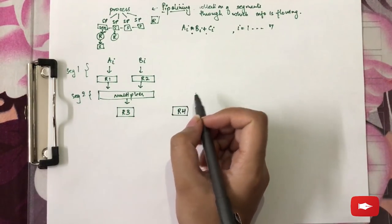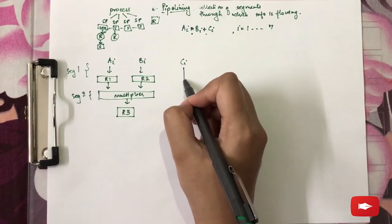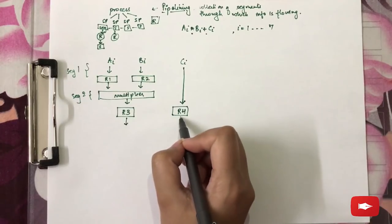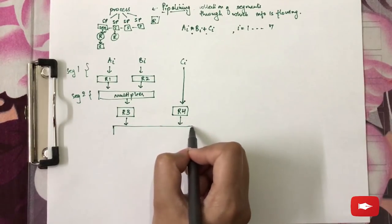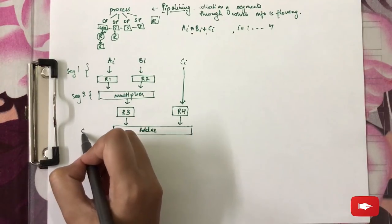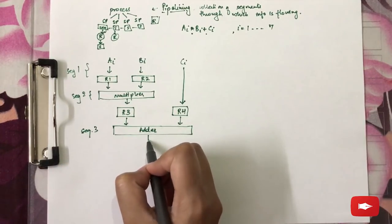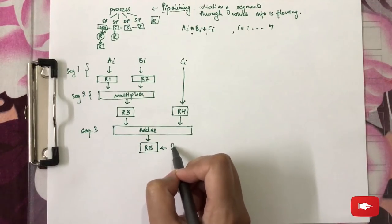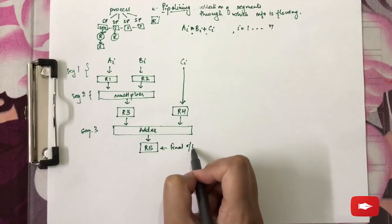And simultaneously we need the operand ci into another register that is R4. And then these two inputs will get into an adder which is segment 3. And the result of this segment is stored in another register that is R5 which will be the final output.